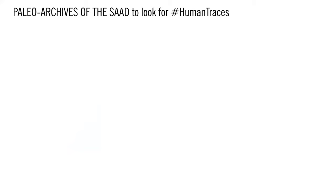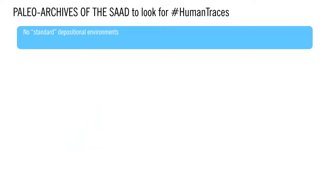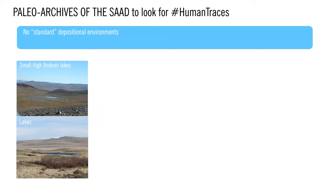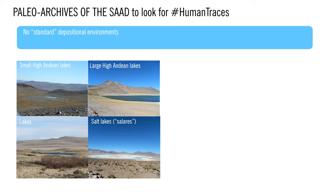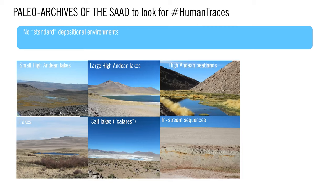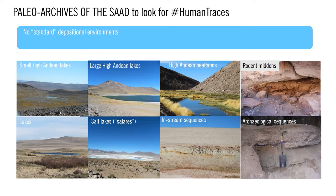What are the paleoarchives from the South American Arid Diagonal where we can look for human traces? Depositional environments in drylands are abundant but are not the standard ones. Small and closed basins of lakes and peatlands are scarce or absent. Among the archives analyzed are the large high Andean lakes, the salt lakes called locally salares, high Andean peatlands, in-stream sequences, rodent middens, and archaeological sequences. Even though all these archives could be sensitive to tracking climatic changes at different spatial and temporal scales, they are not always close to archaeological sites.